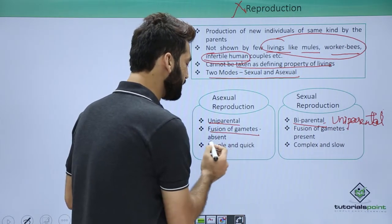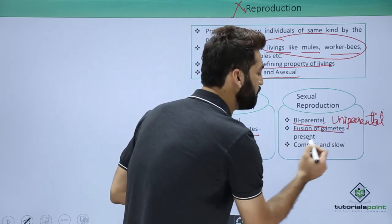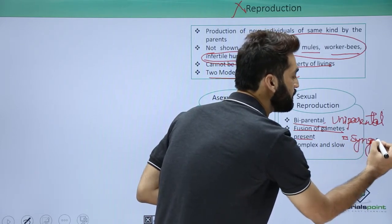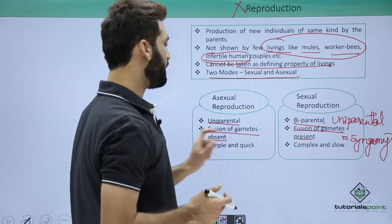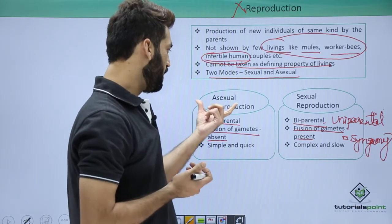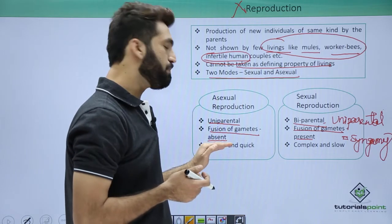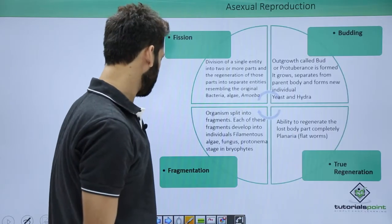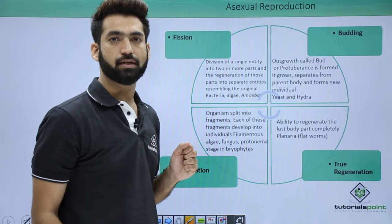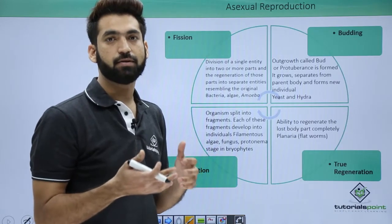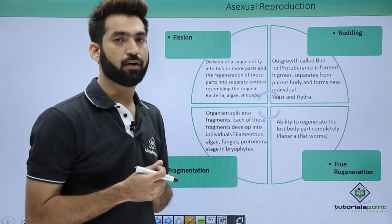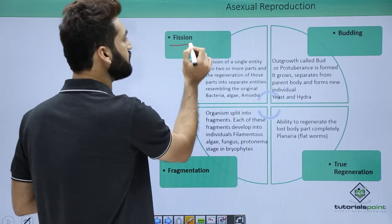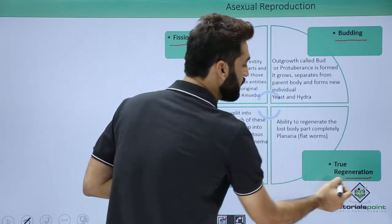In asexual reproduction, fusion of gametes is absent. In sexual reproduction, fusion of gametes — called syngamy — is present. Asexual reproduction is simple and quick, while sexual reproduction is complex and slow. We will discuss sexual reproduction in detail in Class 12 with flowering plants, but here we'll focus on asexual reproduction.